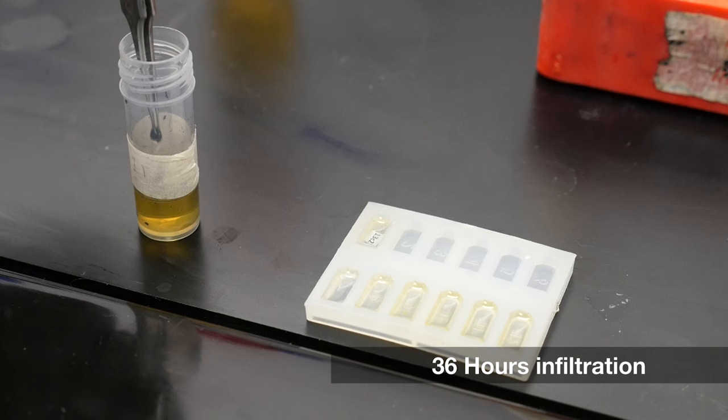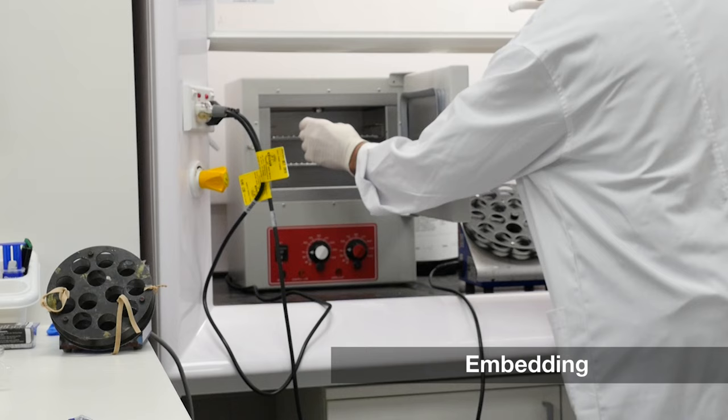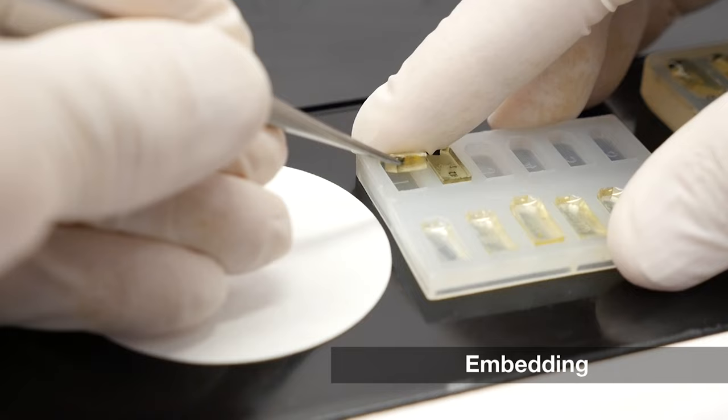Each piece is placed into a small rubber mold, and resin is added. The mold is then placed into a 60 degree oven for two days to harden the resin. The block is now ready for trimming and section cutting.